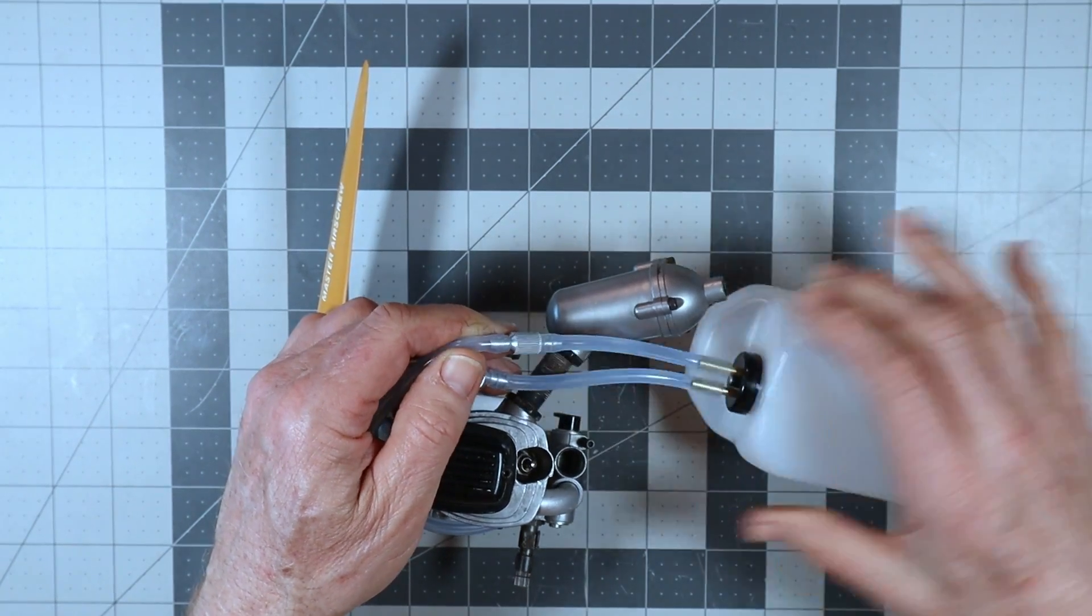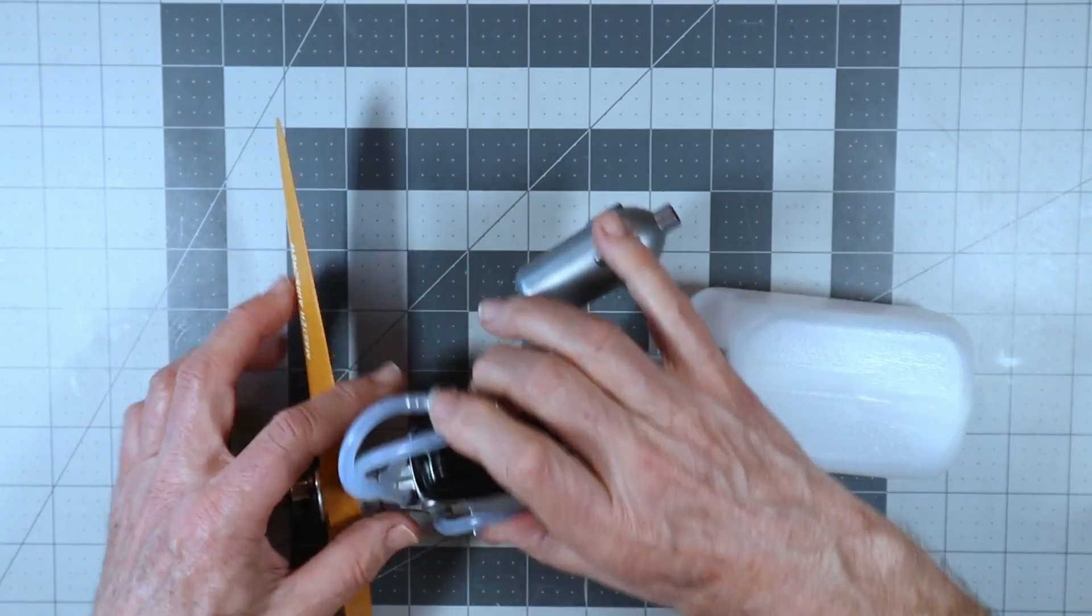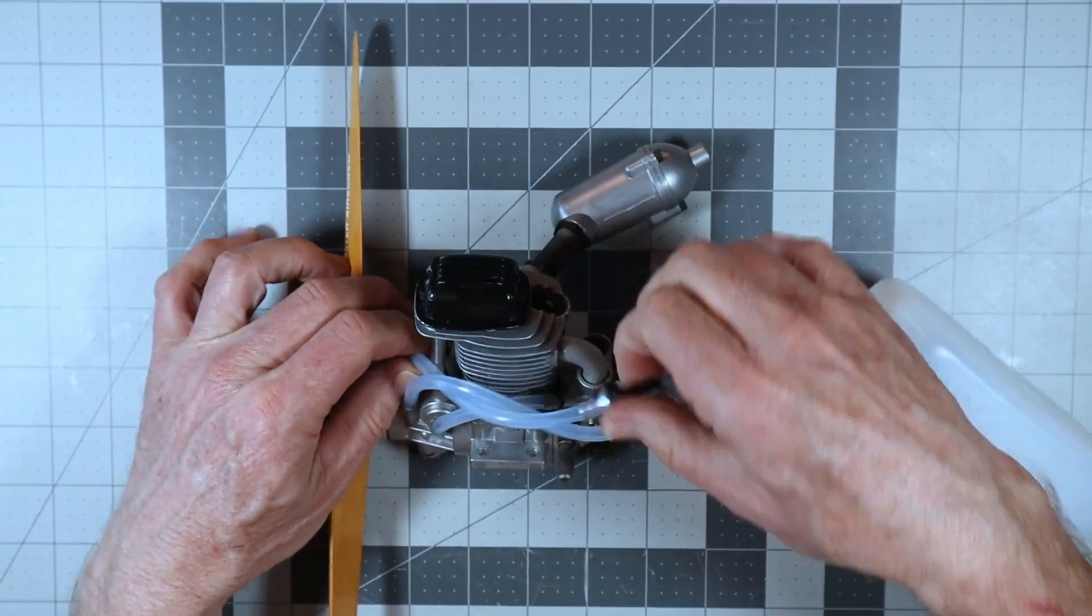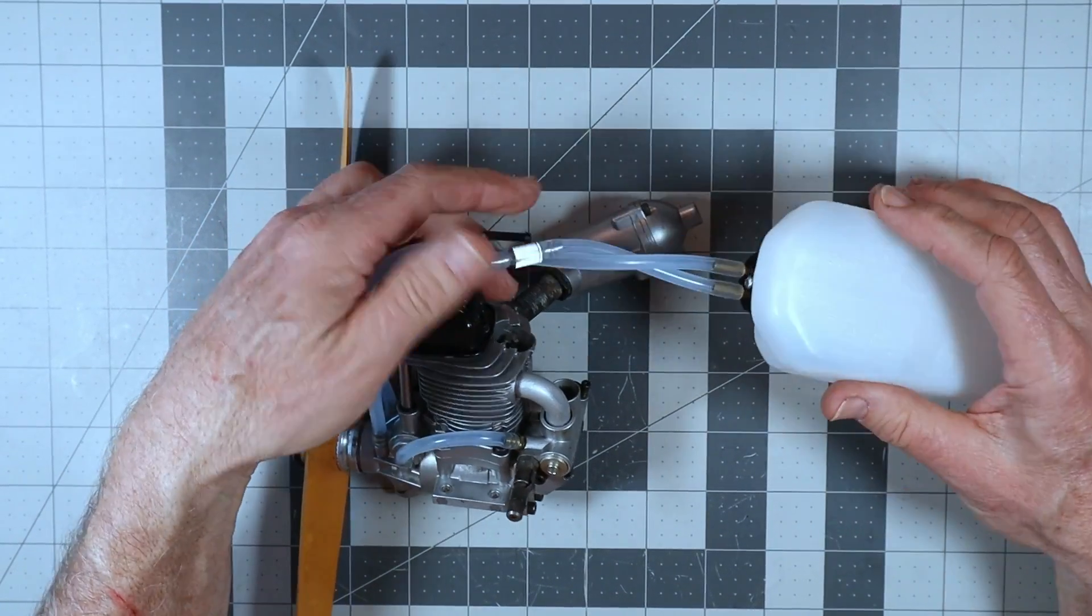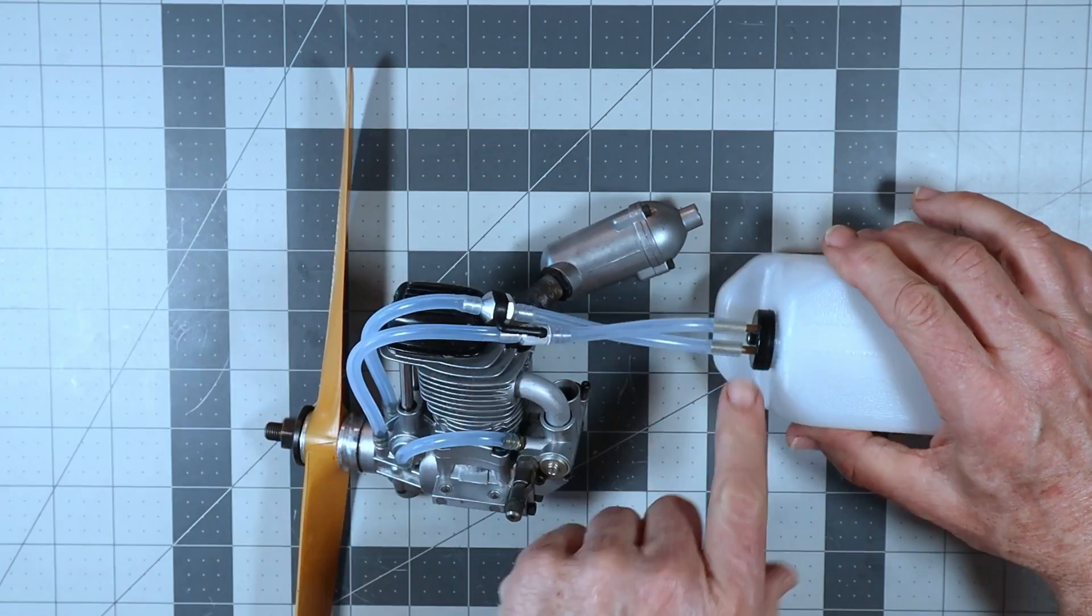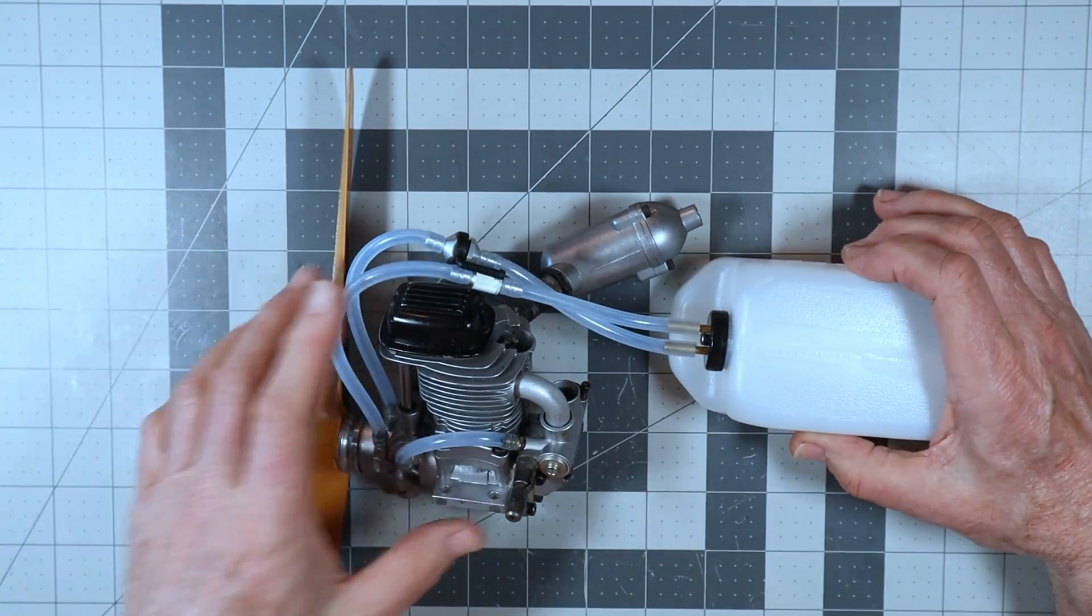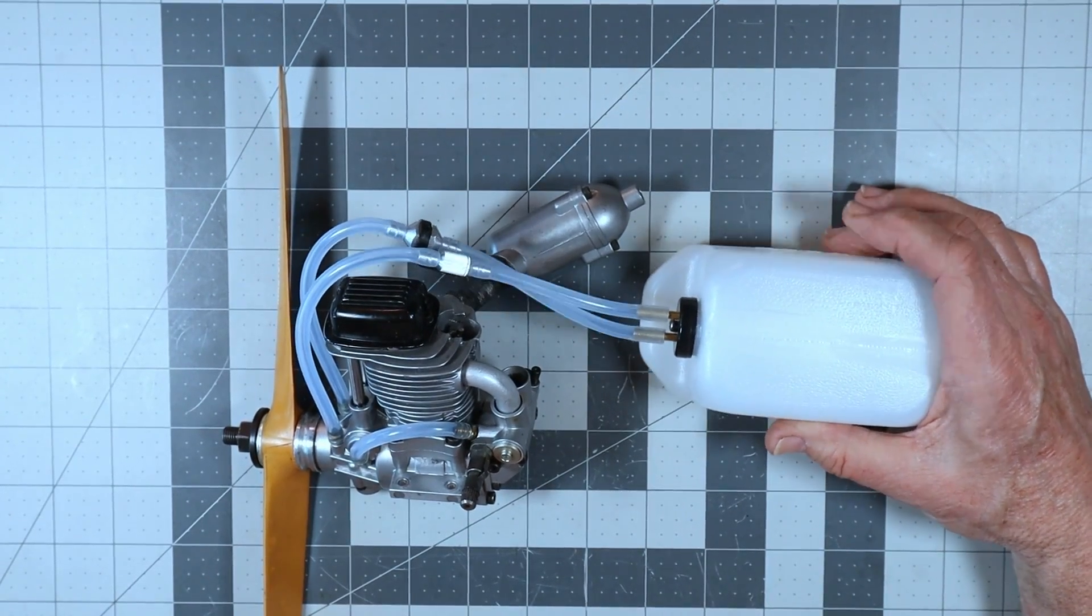The right side line is the line that actually has a fuel filter in line, and it goes to the clunk that will pick up the fuel from the tank.